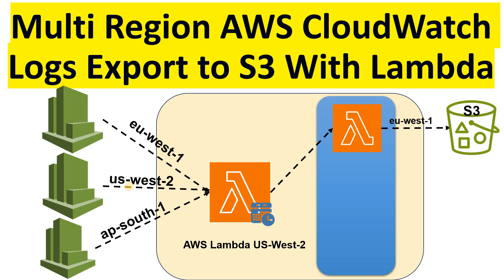It creates instances of the second Lambda to export logs from, say, eu-west-1 region to a bucket created in eu-west-1. If you're using AWS CloudWatch logs and you create a log export task, the S3 bucket must be present in the same region — that is how the CloudWatch log export task works.